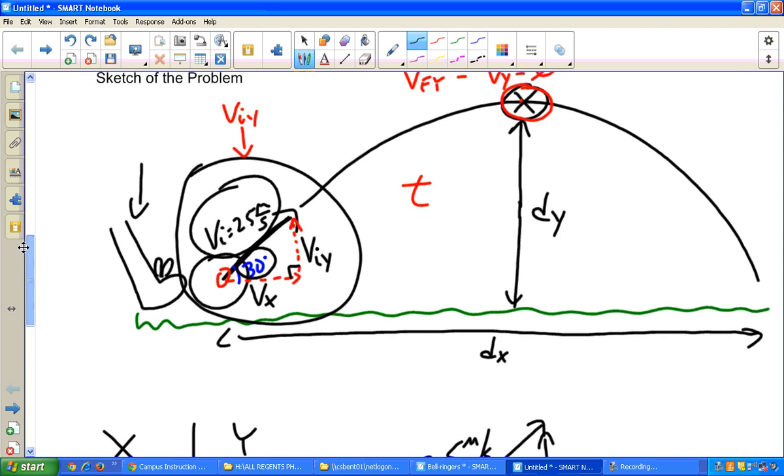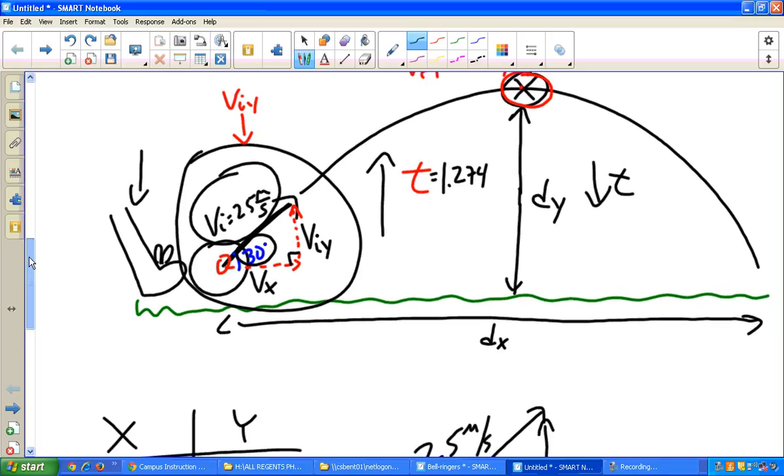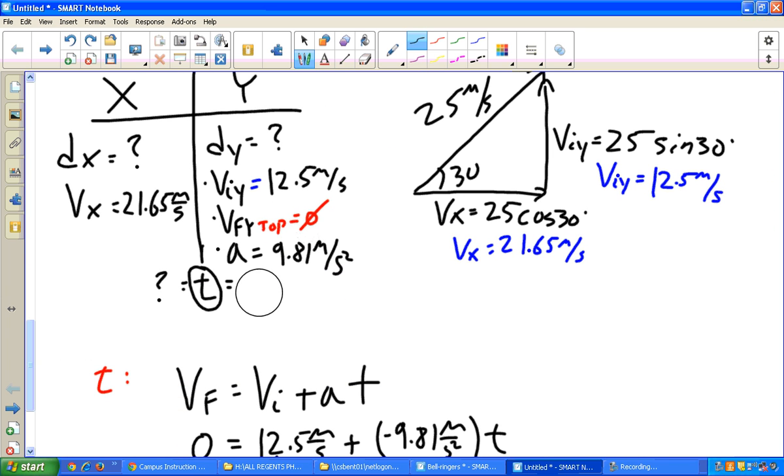And again, that represents the time it takes to go up. T equals 1.274 seconds. Well, we know then the total time to go up and down, because it starts and ends from the same height, is that it takes the exact same amount of time to go down. So our total time in the air then is just double 1.274 seconds. I'm going to go ahead and double 1.274 and I get a time of 2.55 seconds.